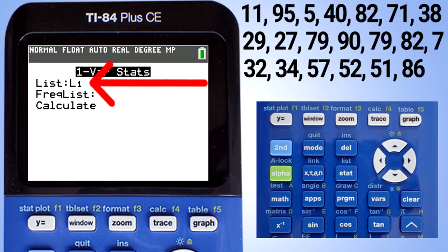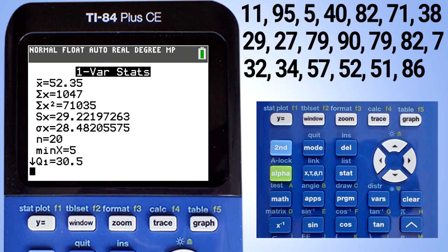We want L1 here in list. If L1 is not here, put L1 there and press the enter button 3 times until this screen appears. This is the standard deviation, 29.22 for our numbers in L1. The variance is the standard deviation squared.